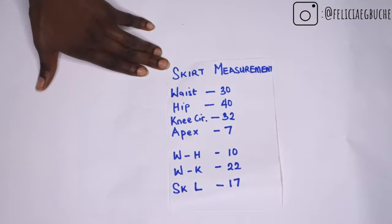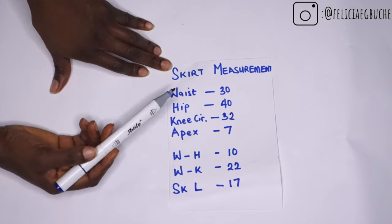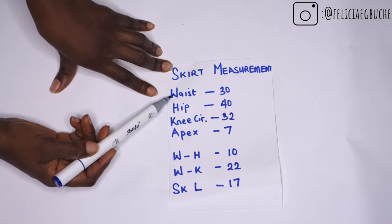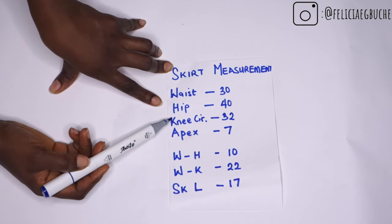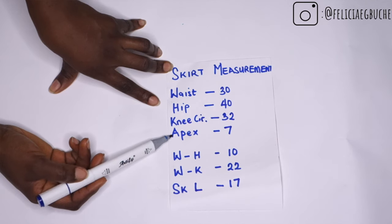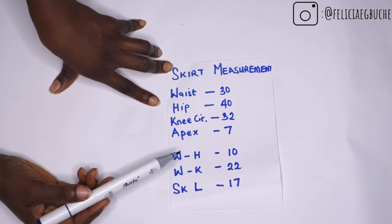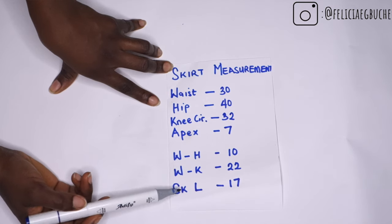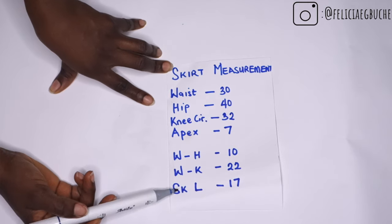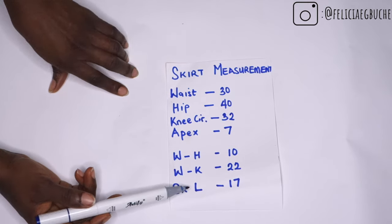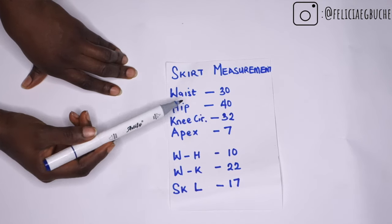These are the measurements that I'll be needing for a skirt. You'll find the link in my description box to take accurate measurements. The first measurement needed is the waist measurement, the hip measurement, the knee circumference and the apex — which is the same thing as the nipple-to-nipple measurement. The length measurements we need are the waist to hip, the waist to knee, and the skirt length.